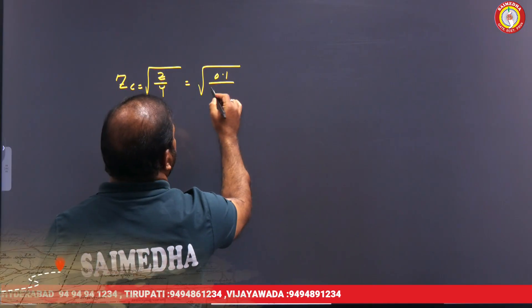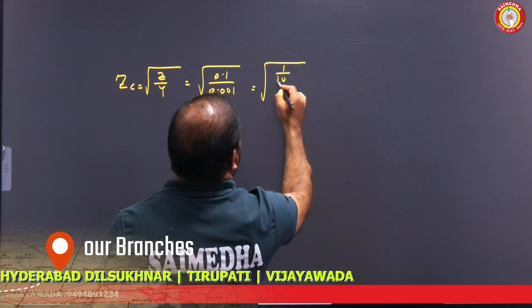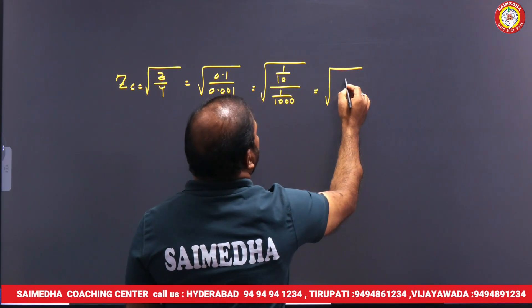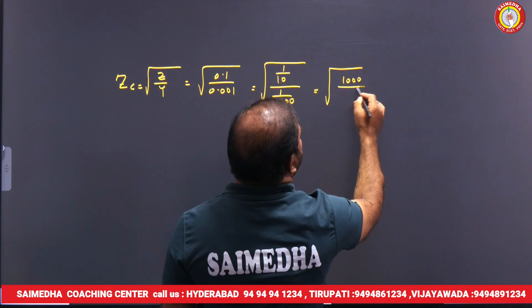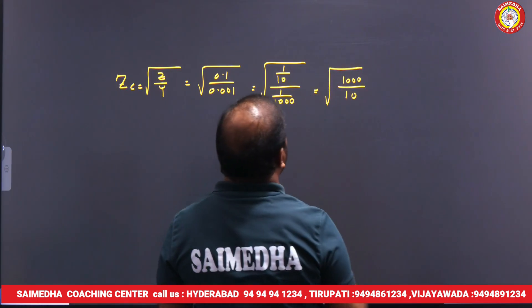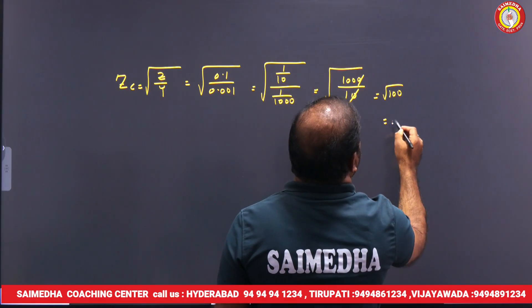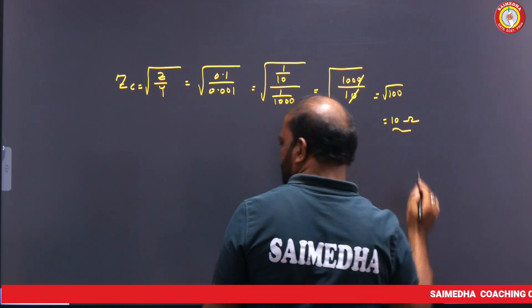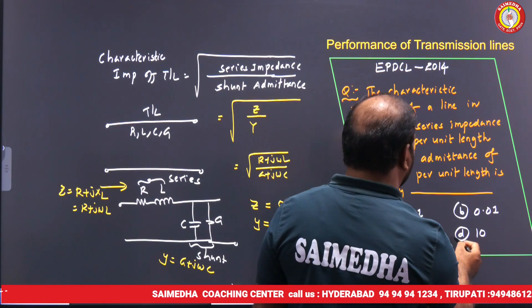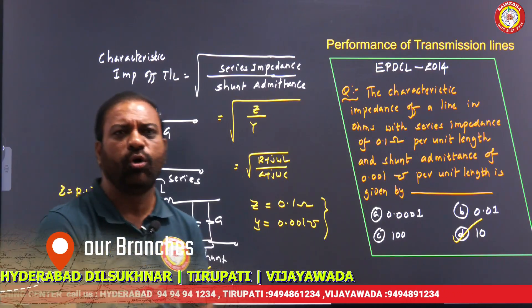Substituting the values: Z_c = √(0.1 / 0.001) = √(100) = 10 ohms. So the characteristic impedance of the line is 10 ohms.